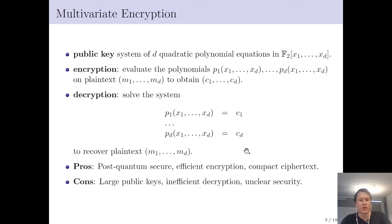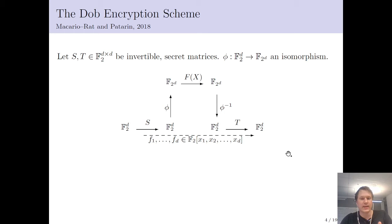The drawbacks, however, could be large public keys, and decryptions are often inefficient depending on the scheme. The security is also very hard to get right, especially for multivariate encryption schemes.